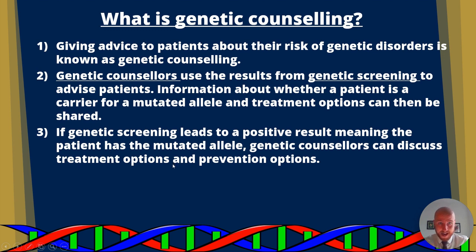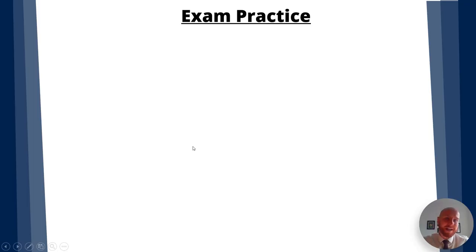What is genetic counselling? It's basically giving advice to patients about their risk of genetic disorders. Genetic counsellors use results from genetic screening to advise patients, providing information about whether they are a carrier for a mutated allele — for example, with cystic fibrosis. The genetic counsellor can then recommend available treatment options. Genetic screening leads to positive results that can be shared by genetic counsellors, and a treatment plan can be arranged.